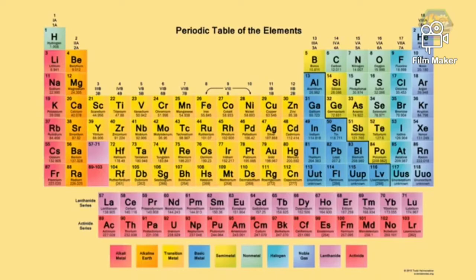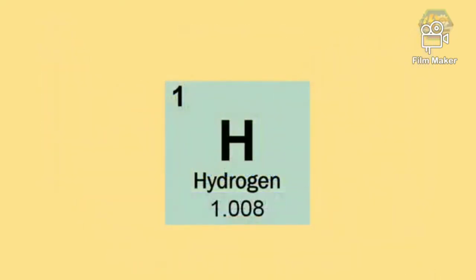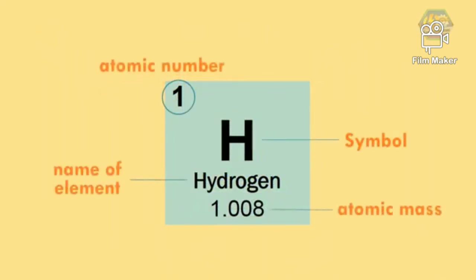Generally, every cell in the periodic table contains the information of an element. These are its symbol, atomic number, name of the element, atomic mass, and many more depending on the periodic table that you are using.